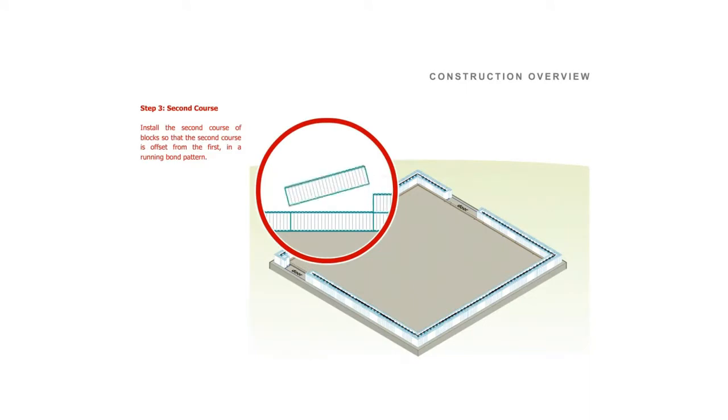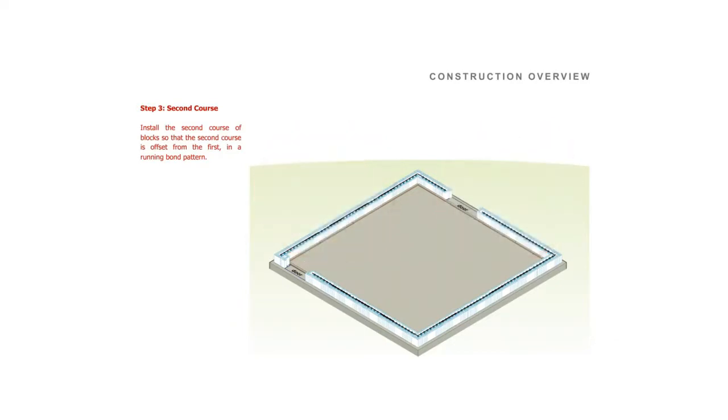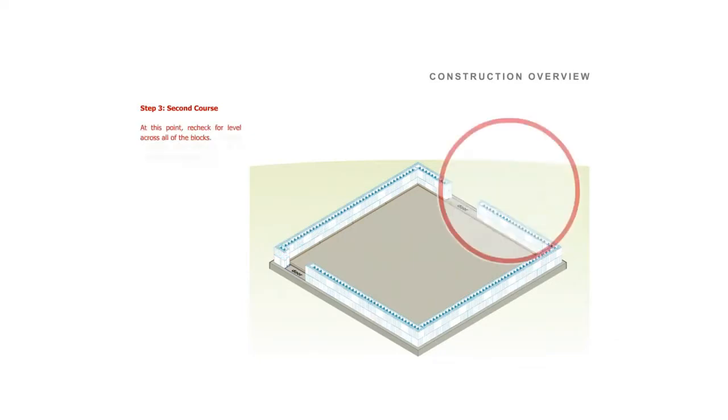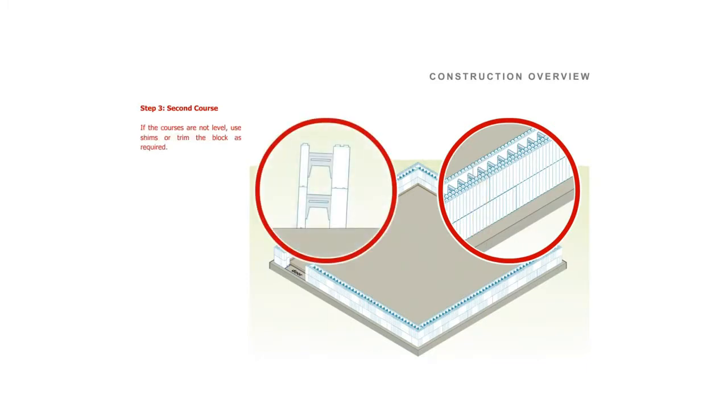Step 3. The second course. Install the second course of blocks so that it is offset from the first in a running bond pattern. At this point, re-check for level across all of the blocks. If the courses are not level, use shims or trim the block as required.